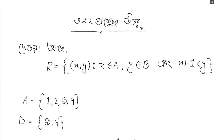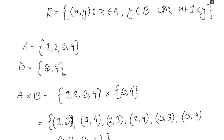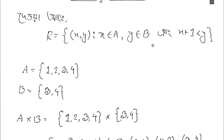Now the relation: R is equal to {(x, y)} such that x belongs to A, and y belongs to B, and x plus 1 is less than y. Let's look at set A, which is {1, 2, 3, 4}, and set B, which is {3, 4}. This means A is a set and we find the cross-product.